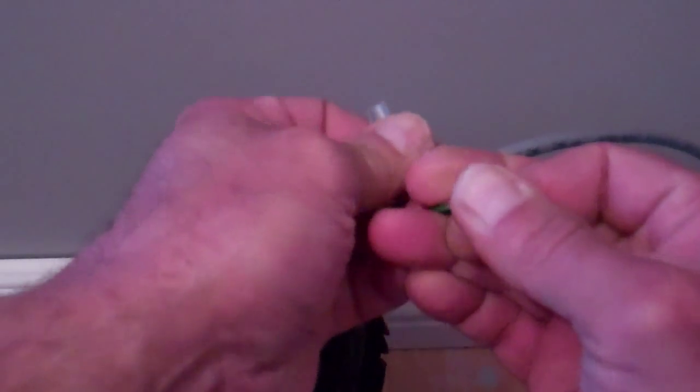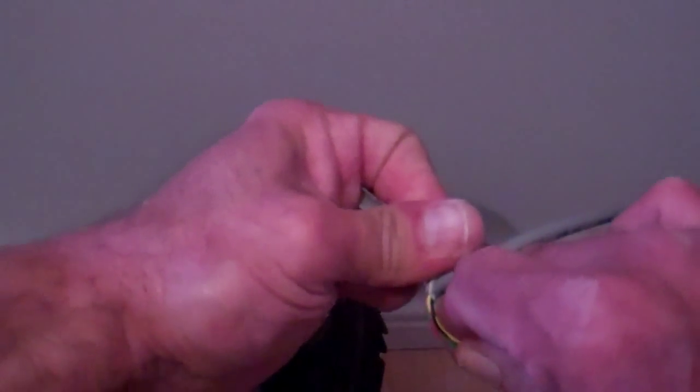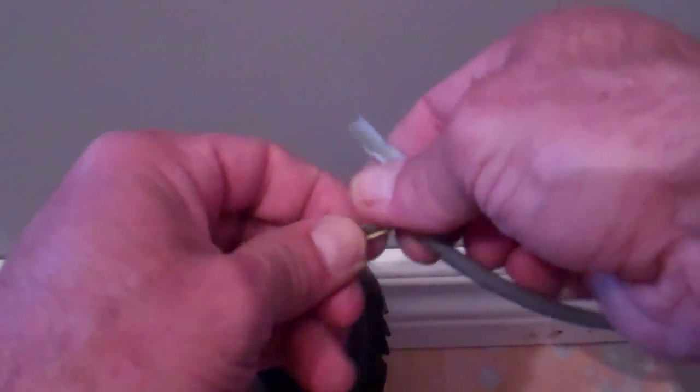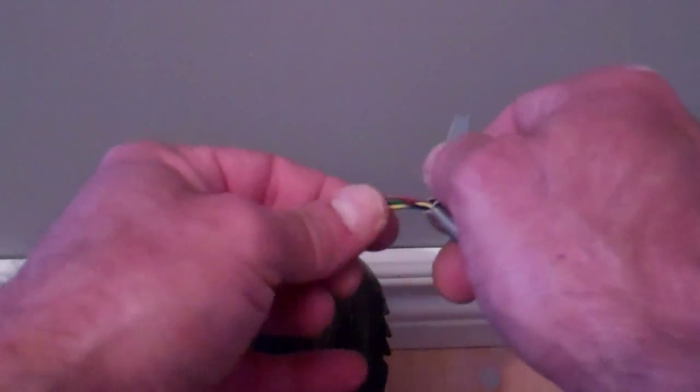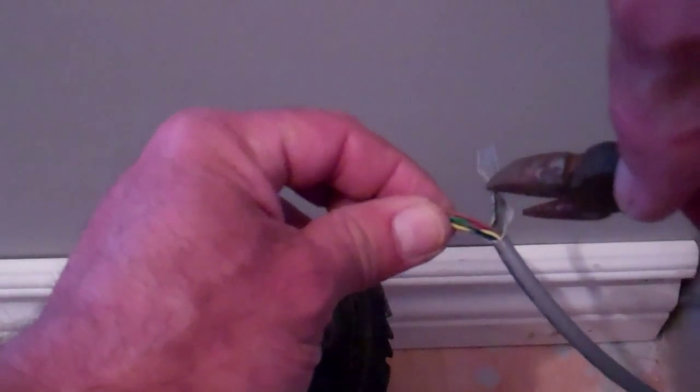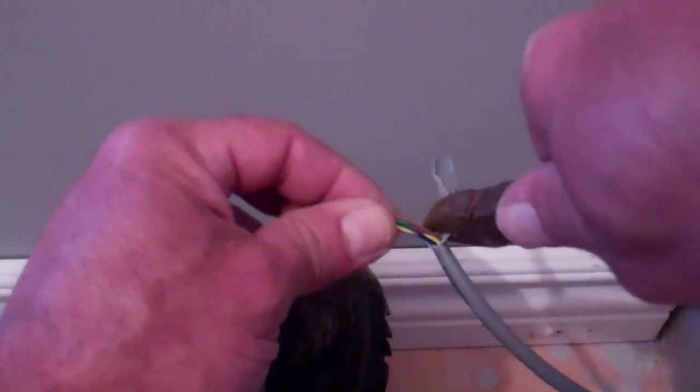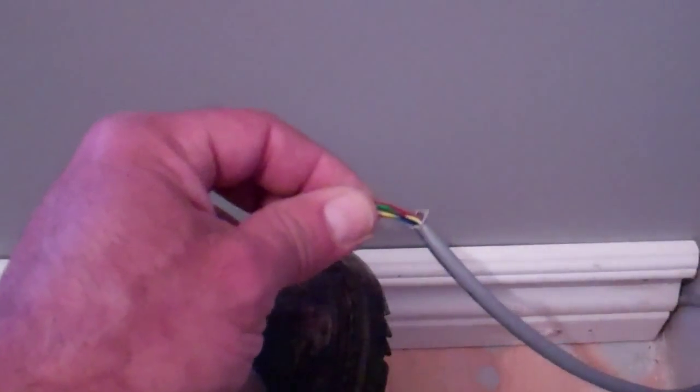Most Cat 5 cable does have that pull string, which is really handy. You get the general idea. Get that back, cut off that outer cable sheathing there.